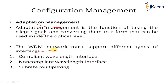The client signal must stay within boundaries agreed upon as part of service management. The WDM network must support different types of interfaces: first, a compliant wavelength interface, where the client sends light at a wavelength supported in the network and must comply with network criteria; second, a non-compliant wavelength interface, which accommodates a variety of client equipment using optical transmitters or receivers not compatible with the WDM network; and third, separate multiplexing, which includes TDM — time division multiplexing — of lower-speed streams into a higher-speed stream within the WDM equipment prior to transmission.